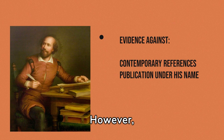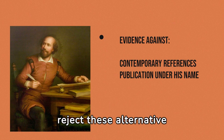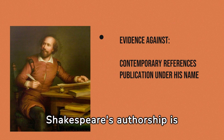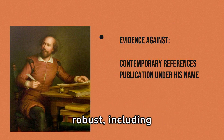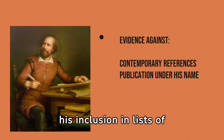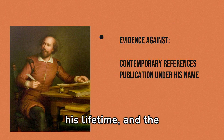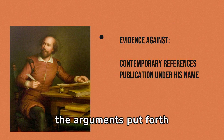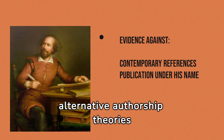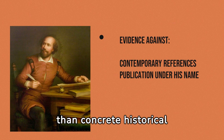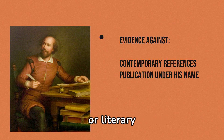However, mainstream scholars overwhelmingly reject these alternative authorship theories. They argue that the evidence supporting Shakespeare's authorship is robust, including contemporary references to him as a playwright, his inclusion in lists of notable authors during his lifetime, and the publication of his works under his name. Furthermore, the arguments put forth by proponents of alternative authorship theories often rely on circumstantial evidence and speculation rather than concrete historical or literary evidence.